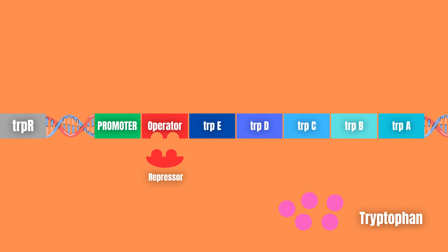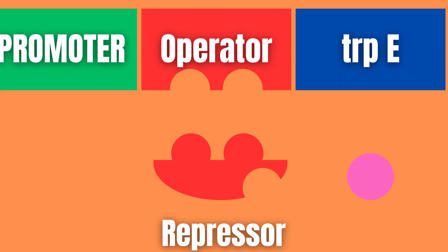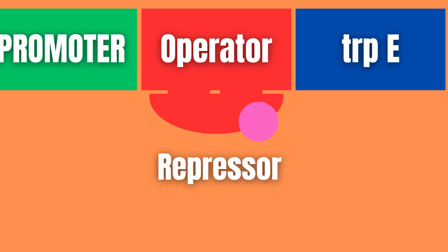When there is an excess of tryptophan in the environment, it is a waste of energy and resources to make more. Luckily, tryptophan is a co-repressor of the TRP operon because it binds to the inactivated repressor, thereby activating it to repress the operon.